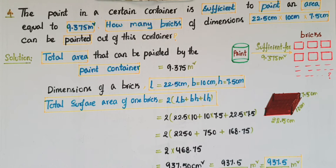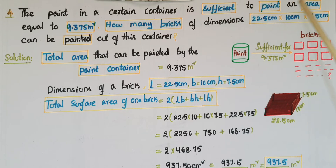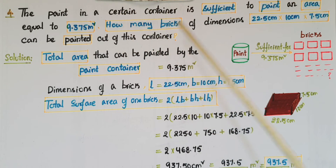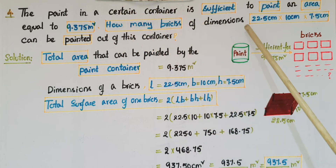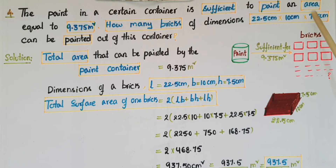Hello everyone, today I am going to tell the solutions of Exercise 13.1 from Surface Areas and Volumes from NCERT Class 9. This is the fourth problem: the paint in a certain container is sufficient to paint an area equal to 9.375 meter square. How many bricks of dimensions 22.5 cm × 10 cm × 7.5 cm can be painted out of this container?